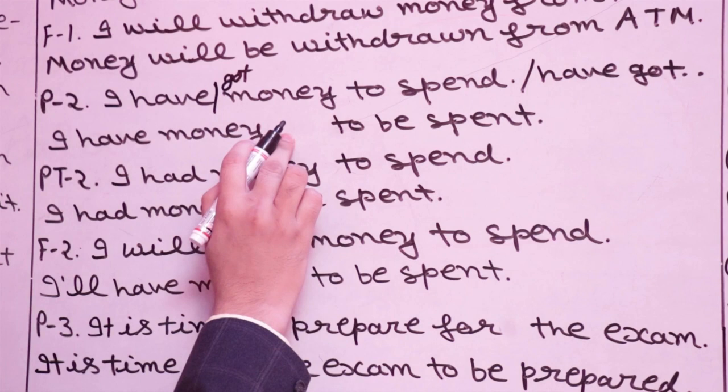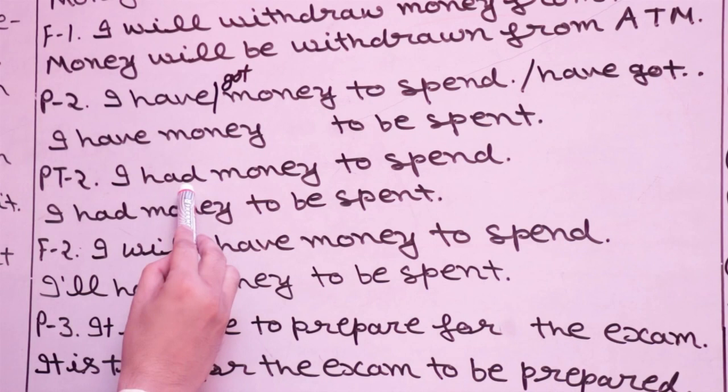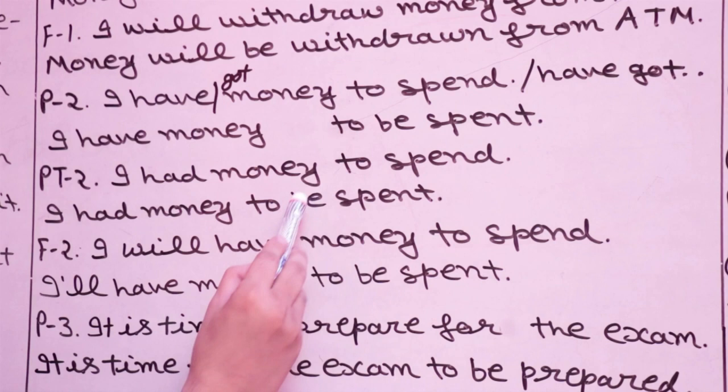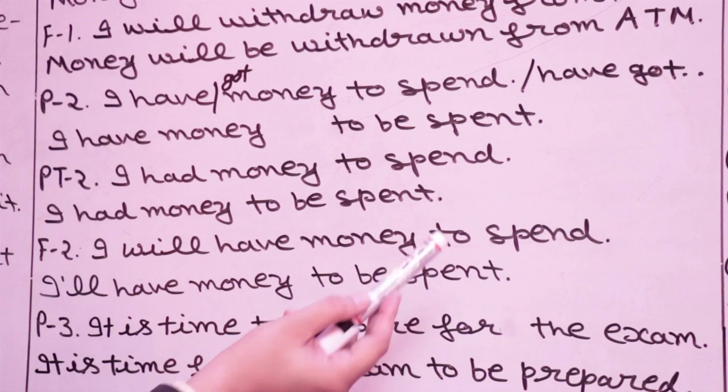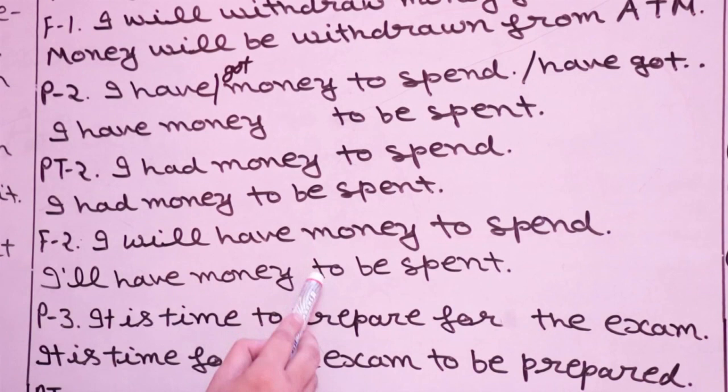F2 — future: 'I will have money to spend' becomes 'I will have money to be spent.' The meaning remains the same throughout. Note that in P2 and its variants, we simply add 'be' after 'to' and use the third form of the main verb.